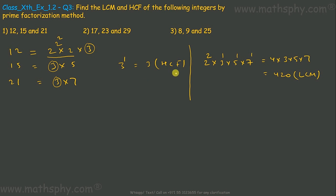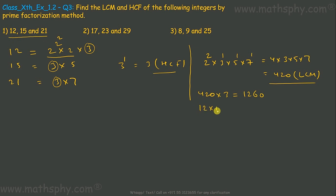So HCF is 3 and LCM is 420 for these three integers. Now let's multiply LCM and HCF: 420 × 3 = 1260. Let's also multiply the three numbers together: 12 × 15 × 21 = 3780. These two results are not equal.